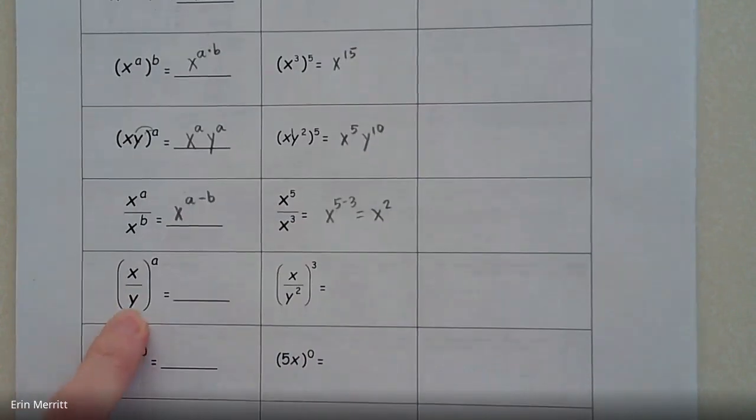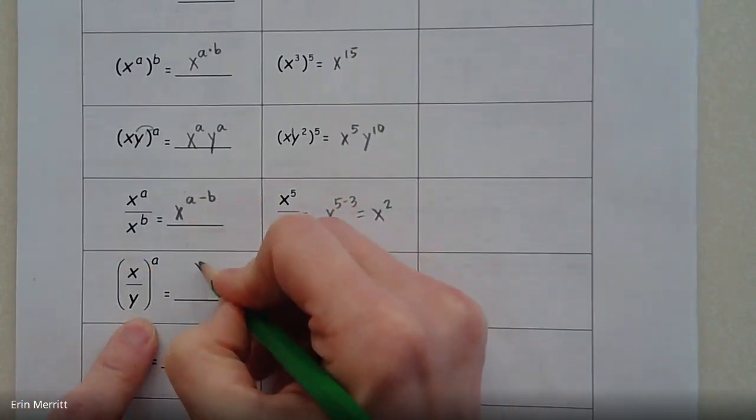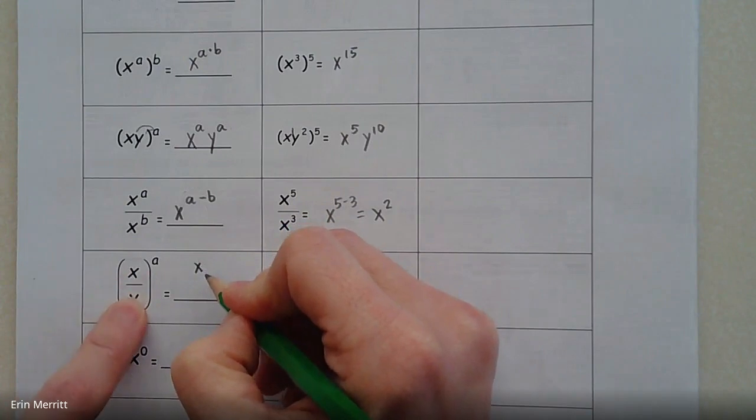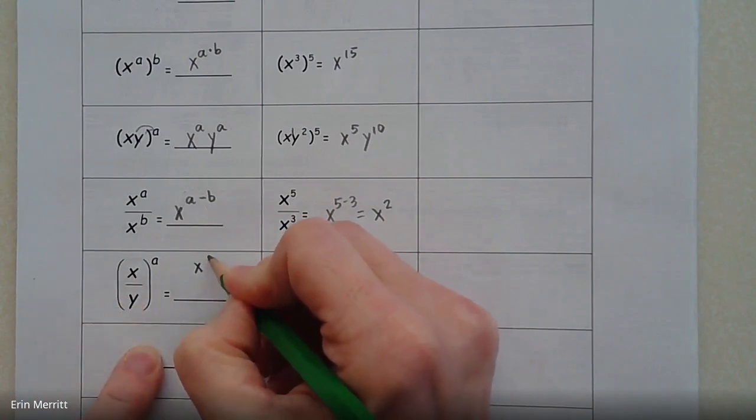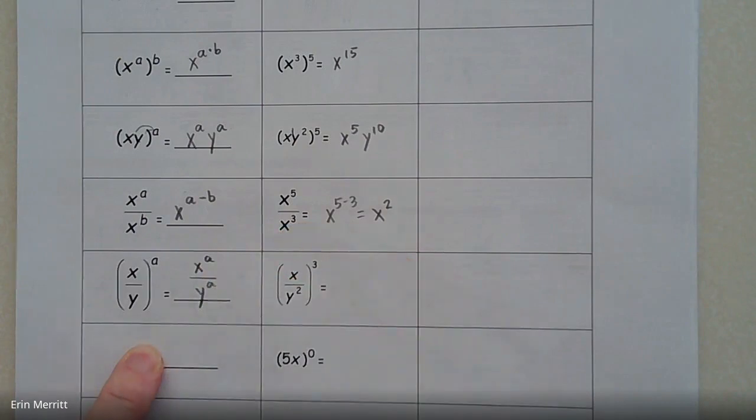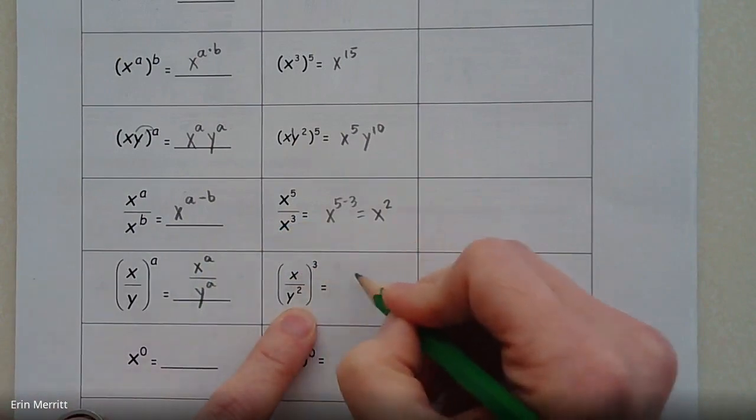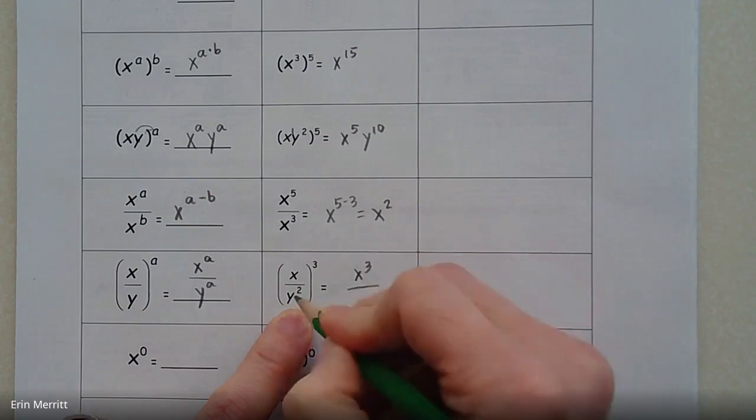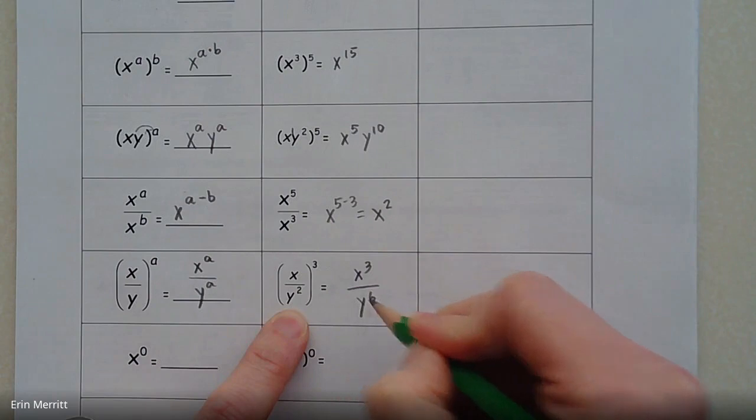All right, for the next one, this is another example of just showing that as long as it's just a monomial inside of here, then we can make this x to the a and then over y to the a. So if you expand that over here, this becomes x cubed and then y to the second squared. So power raised to a power, that gives us y to the 6th.